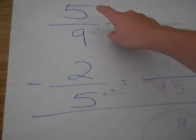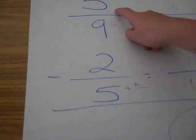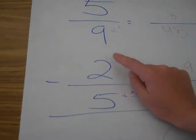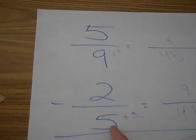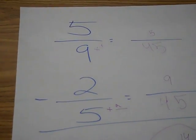Okay, so I'm trying to figure out 5 ninths minus 2 fifths. Well, here's what I did.